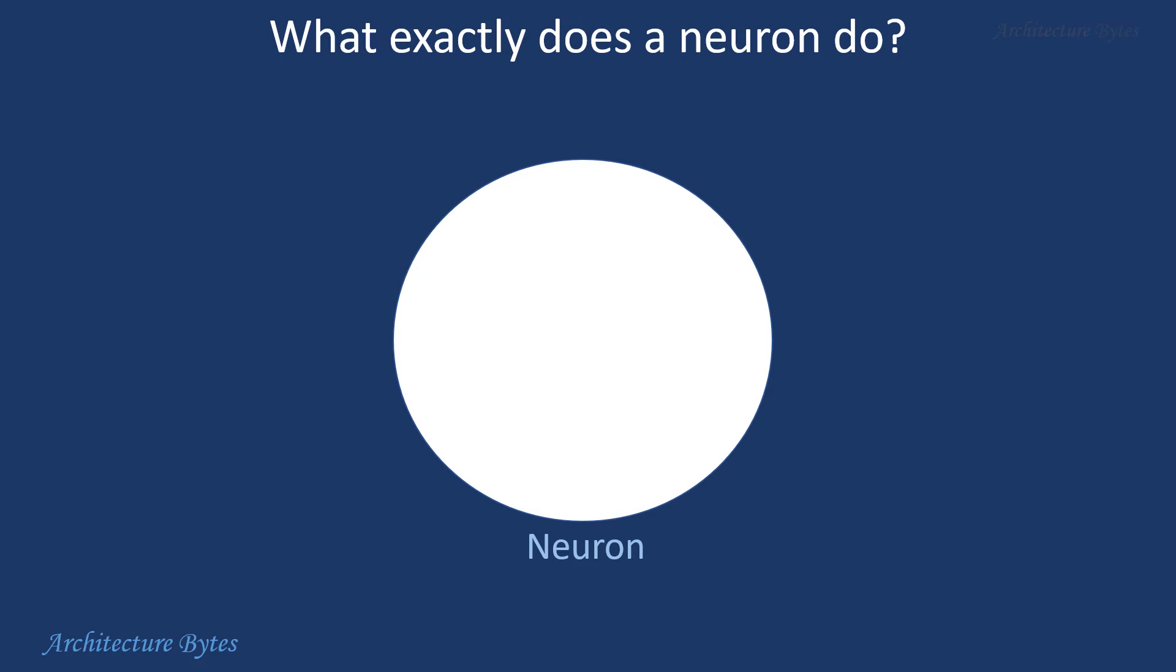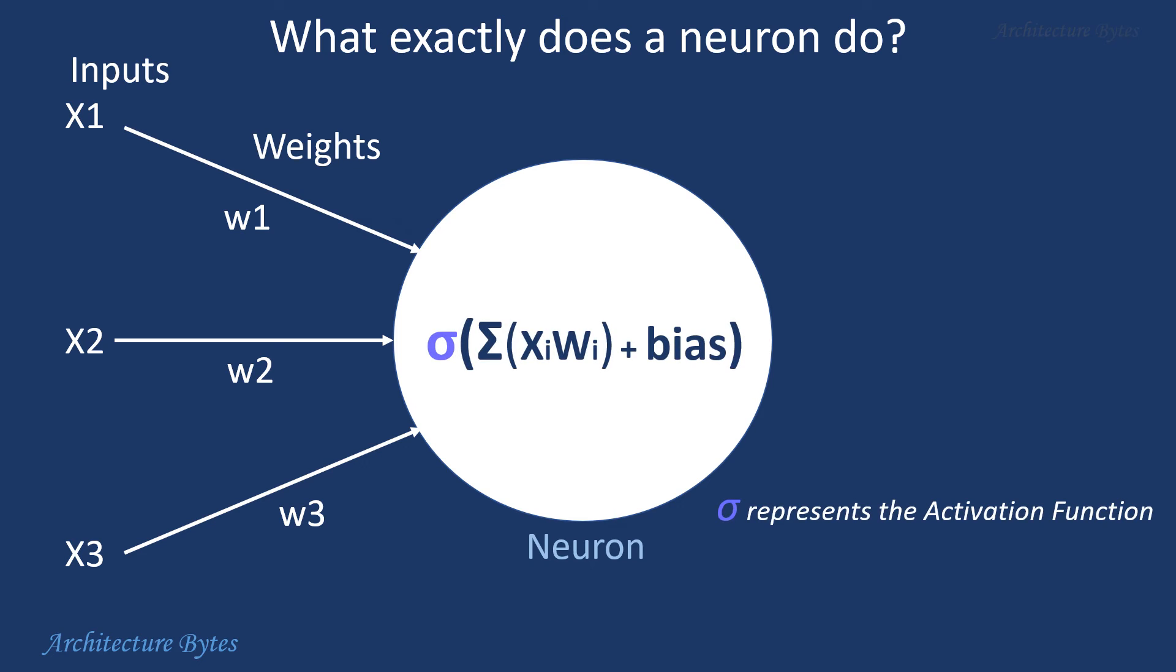Let us understand what goes on inside a neuron. Assume x1, x2 and x3 are inputs to the neuron, which are simply numerical values. And w1, w2 and w3 are weights for each of the corresponding input connections. Every input is multiplied with its corresponding weight and all the resulting weighted inputs are summed up and a bias is added to it. The result is passed on to an activation function, which spits out the output for that neuron.